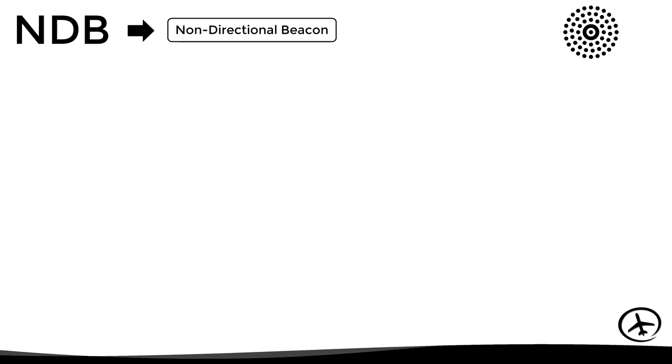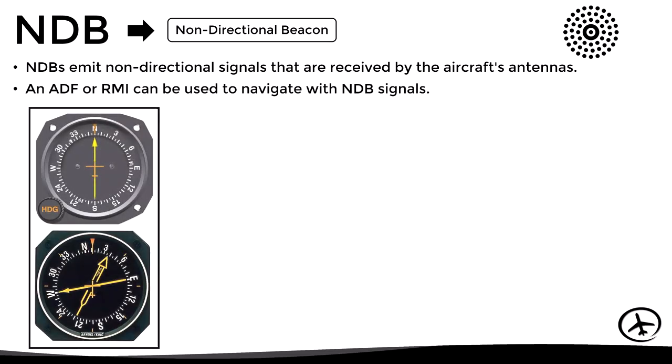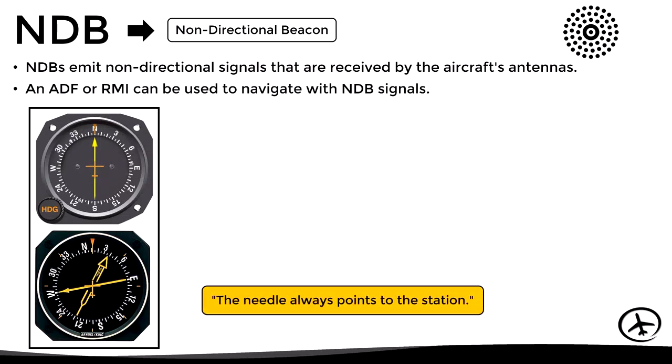A non-directional beacon, or NDB, is a navade that emits non-directional radio waves which are received by the aircraft's antennas. In order to navigate with an NDB signal, the aircraft must be equipped with an automatic direction finder, abbreviated as ADF, or a radiomagnetic indicator, abbreviated as RMI. In simple terms, these instruments consist of a compass rose and a needle which always points to the NDB station.